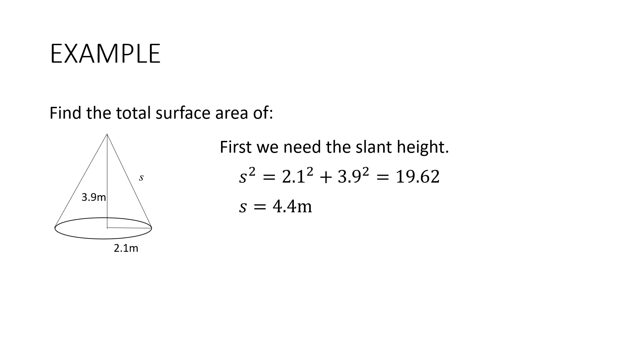Now we're going to put it into the formula. We've got πr² plus πrs. Substituting in and then putting into the calculator, we get 42.9 metres squared.